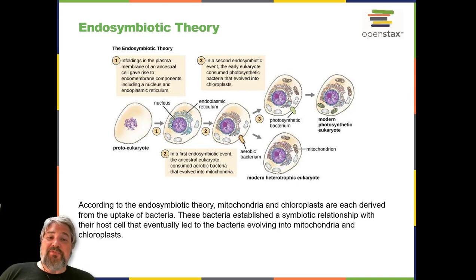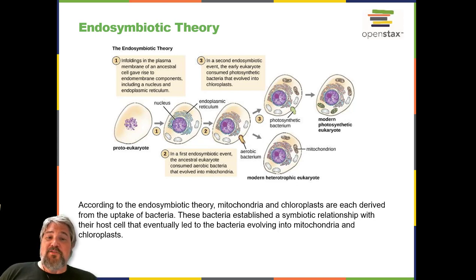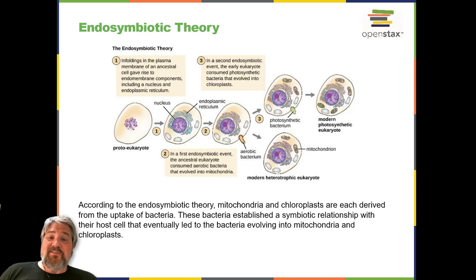Modern genome sequencing work supports the dissenting scientists by showing that much of the genome of mitochondria has been transferred to the host cell's nucleus, preventing the mitochondria from being able to live on their own. Wallin's ideas regarding the endosymbiotic hypothesis were largely ignored for the next 50 years because scientists were unaware that these organelles contained their own DNA. However, with the discovery of mitochondrial and chloroplast DNA in the 1960s, the endosymbiotic hypothesis was resurrected.